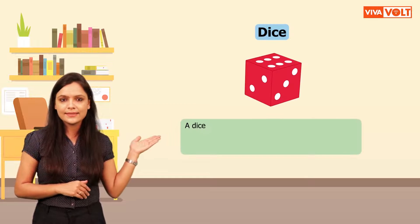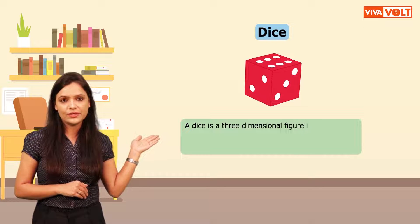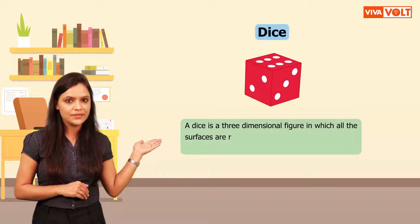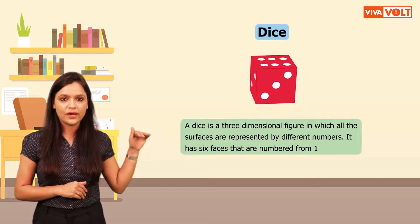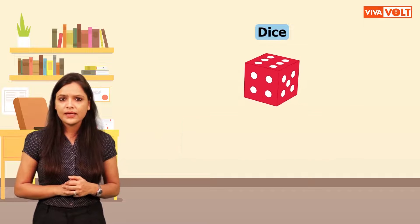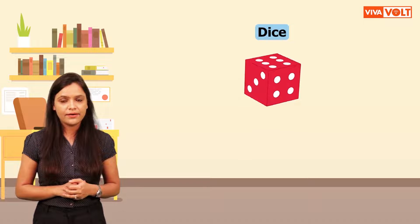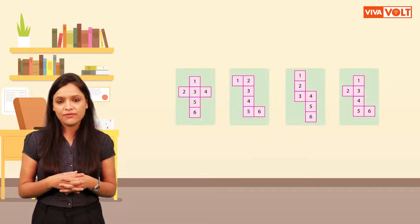Now, let's learn about dice. A dice is a 3-dimensional figure in which all the surfaces are represented by different numbers. It has 6 faces that are numbered from 1 to 6. If the surfaces of the dice are unfolded and placed on a plane, the figure of a dice so obtained will appear as one of the following figures.